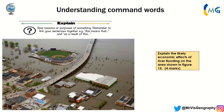When you 'explain,' you've usually got four marks. Explain is similar to describe but people often get them confused. Describe is saying what you see — for example, I can see flooding. Explain is telling me why it's flooded — you give reasons using phrases like 'as a result' and 'this means that.' For example: explain the likely economic effects of river flooding on an area shown in figure 15.